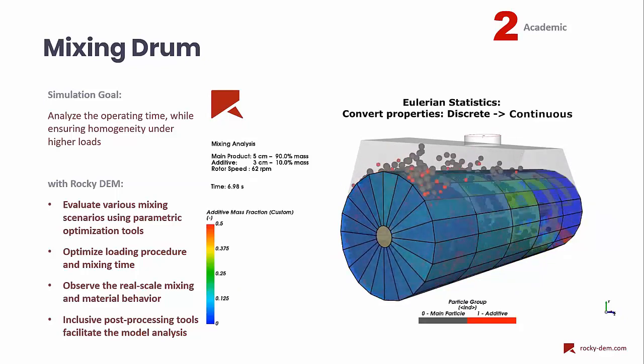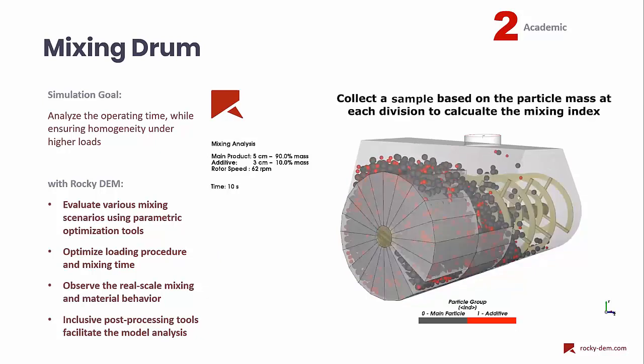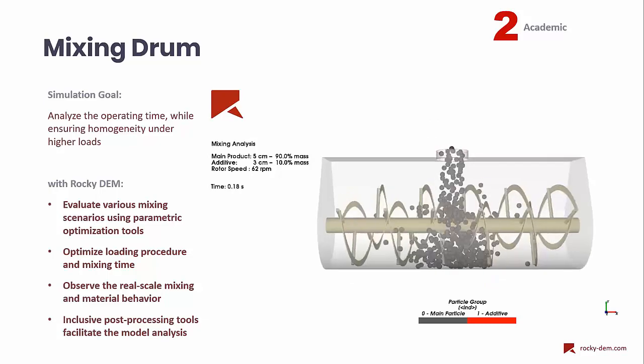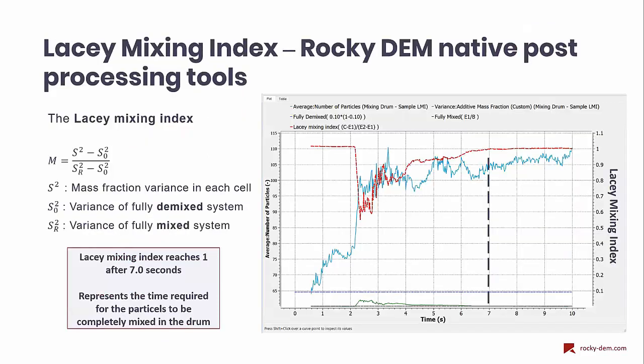Using Rocky DEM post-processing tools, we can convert discrete variables to continuous form of them, so we are able to see the mass fraction and the volume fraction inside the drum. By taking a sample, we can determine the degree of mixing. Using statistical approaches, we can determine parameters like Lacey mixing index to find the time the process has reached the complete mixing.